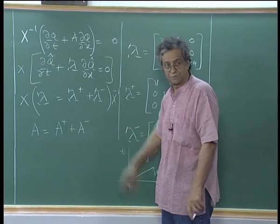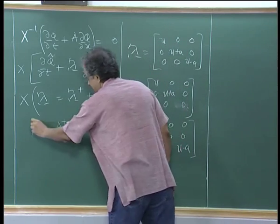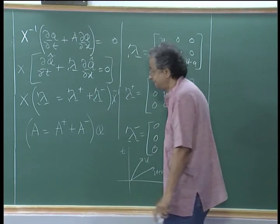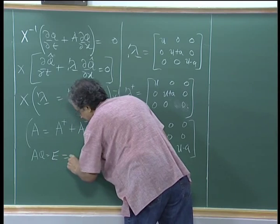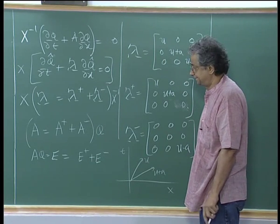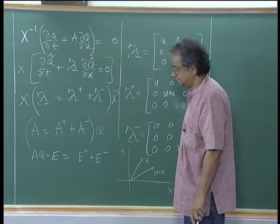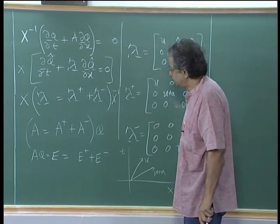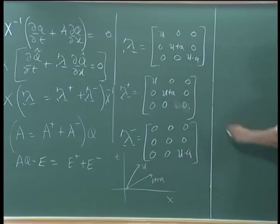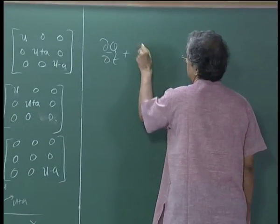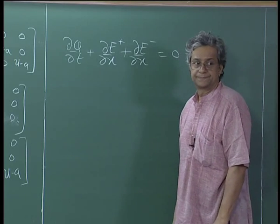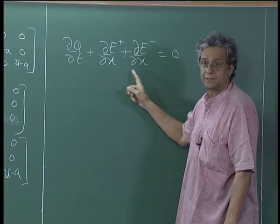In this particular case, if I multiply the equation by q, then Aq = E = E⁺ + E⁻. I have split the fluxes. The result is therefore: ∂q/∂t + ∂E⁺/∂x + ∂E⁻/∂x = 0, where I have split the fluxes into two parts. I will let you do the algebra — it is not that difficult.